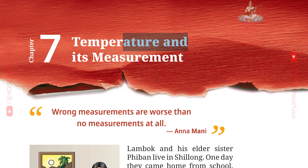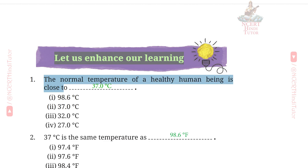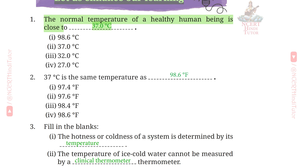Chapter 7: Temperature and its Measurement — Question Answers, Class 6 Science. Let us enhance our learning. Question 1: The normal temperature of a healthy human being is close to 37 degrees Celsius.